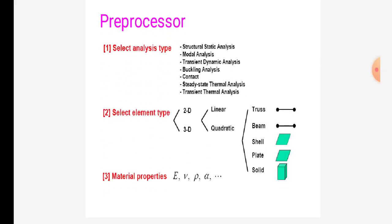In pre-processor, there is select analysis type like structural static analysis, modal analysis, transient dynamic analysis, buckling analysis, contact, steady-state thermal analysis, transient thermal analysis. Next, we select element types like 2D element or 3D element. There is also linear and quadratic like truss, beam, shell, plate, solid.